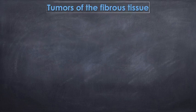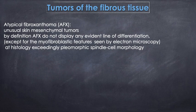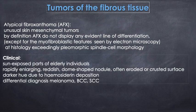Atypical fibroxanthoma is a tumor of the fibrous tissue — an unusual skin mesenchymal tumor. By definition, AFX does not display any evident line of differentiation except for the fibroblastic features seen by electron microscopy. In histology, we can see exceedingly pleomorphic spindle cell type morphology.